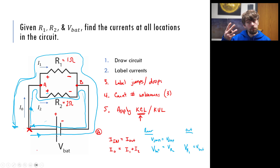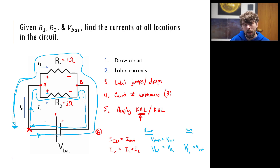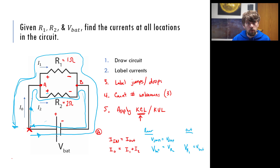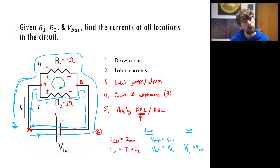For completeness, there is one more loop — the inner loop containing just the two resistors. If you choose that loop, the potential drop across one resistor equals the potential jump across the other. That's a third loop equation, although we only needed two KVL equations plus one KCL equation to solve the three unknowns.